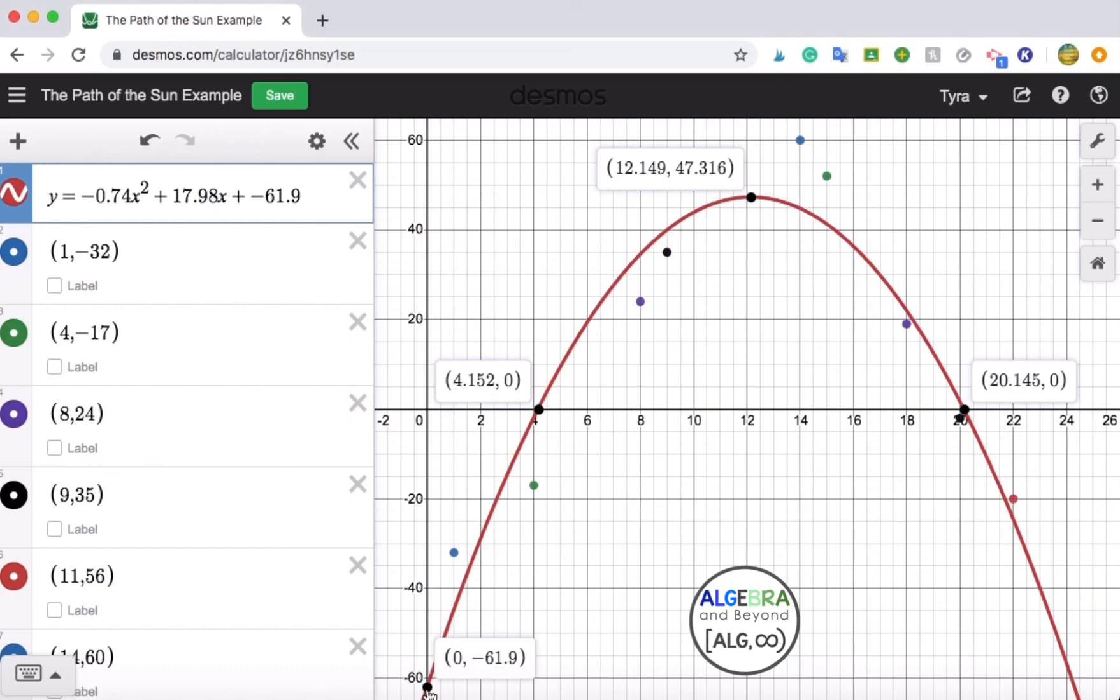So those are really helpful points and you want to click on those so when you screenshot your graph or save it however you're doing so, you can see that information before turning in your project. I hope this helped.